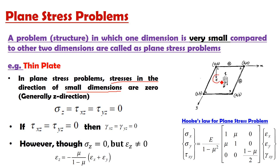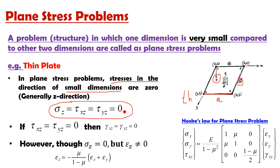Normally the z-direction represents the small dimension, that is the thickness of the plate. For a thin plate with length a, width b, and thickness t (or h) in the z-direction: the direction in which the dimension is very small has stresses equal to zero. So if z represents the small dimension, then σz, τxz, and τyz are equal to zero. These stresses which have a z-coordinate become zero.